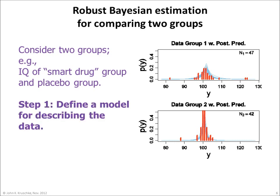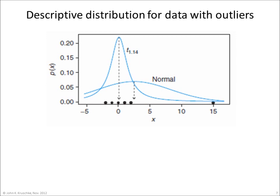The first step in Bayesian estimation is to define a model for describing the data. This figure shows six data points illustrated by black dots. Notice that five of the data points are clustered together, while one data point falls to the far right. The best-fitting normal distribution is pulled by that outlying point so that the normal does not describe the data well. By contrast, the best-fitting t-distribution is nicely peaked over the main cluster of data points with a long tail that accommodates the outlier.